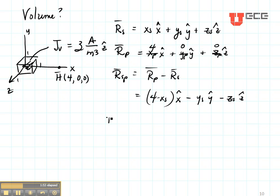Let's define our current. I, in this case, is going to be JV DV. So that is going to be 3. And then what's DV? DV is a small piece of this volume. So it's going to be DX, DY, and DZ.